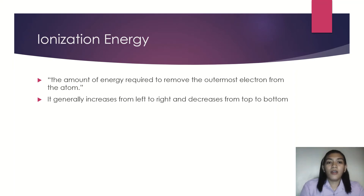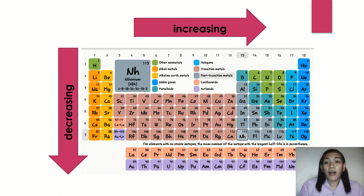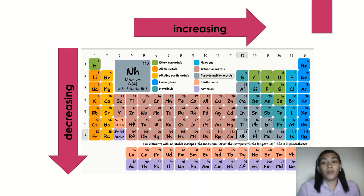Generally, ionization energy increases from left to right and decreases from top to bottom. The ionization energy of elements at group 1 would be lower compared to those of groups 6 and 7, and the trend is decreasing from higher periods to lower periods.